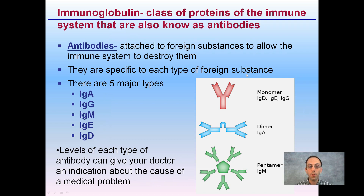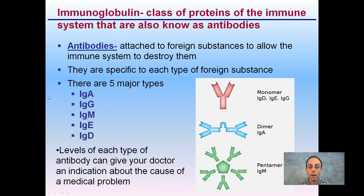As a result, we have many different types of antibodies. We can classify them into five main groups: IgA, IgG, IgM, IgE, and IgD — with 'Ig' being the abbreviation for immunoglobulin. Levels of each type can give your doctor an indication about the cause of a medical problem. There are certain tests done for specific antibodies to determine if your body has been exposed to certain antigens.